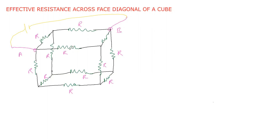According to symmetry, consider a plane that passes through points 1, 2, 3, and 4. This plane is a plane of symmetry of the diagram, so the potential at points 1, 2, 3, and 4 will all be equal. That is, potential at 1 equals potential at 2 equals potential at 3 equals potential at 4.